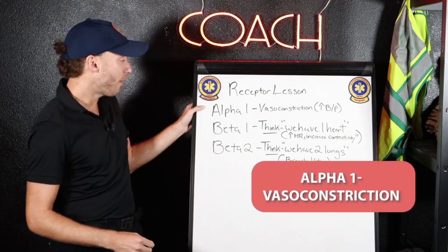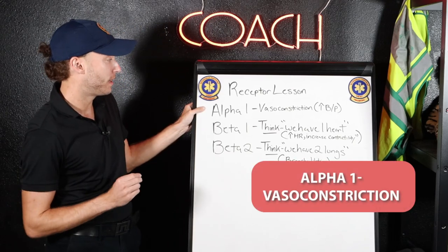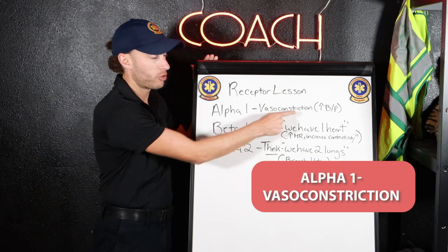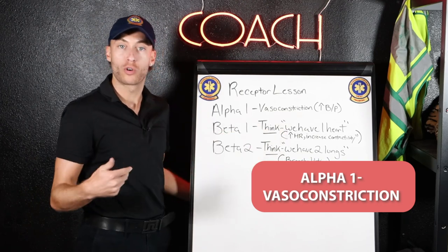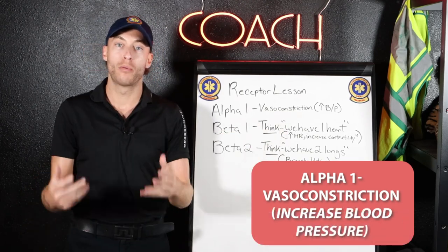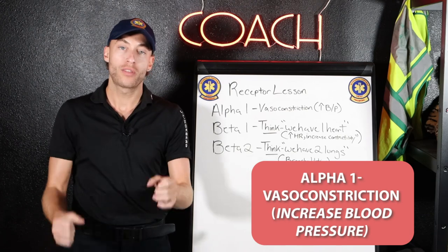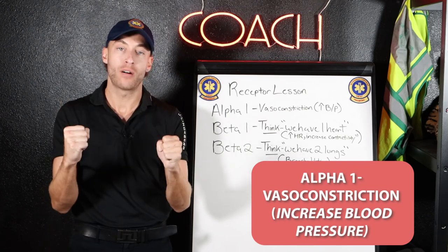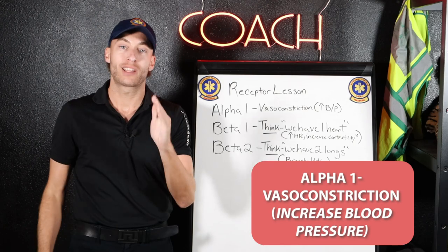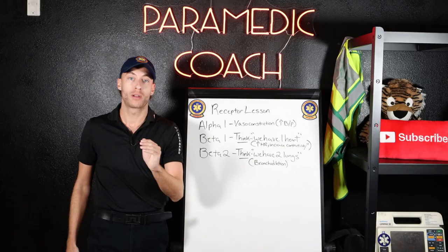The alpha-1 receptors, when they are turned on — when they're activated — you're going to get vasoconstriction, which is going to increase the patient's blood pressure. So alpha-1: think mass clampdown, vasoconstriction — that's when alpha-1 is turned on.